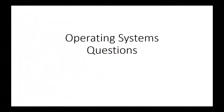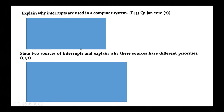Here are some operating system questions that may come up. Let's begin. First question: explain why interrupts are used in the computer system, state two sources of interrupts, and explain why these sources have different priorities. You can pause the video now if you want to have a go at these.